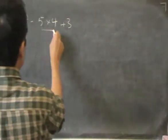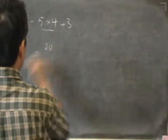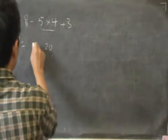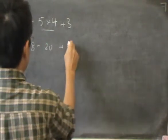So 5 times 4 is 20. I calculate that first. I don't do anything to the other two numbers here.